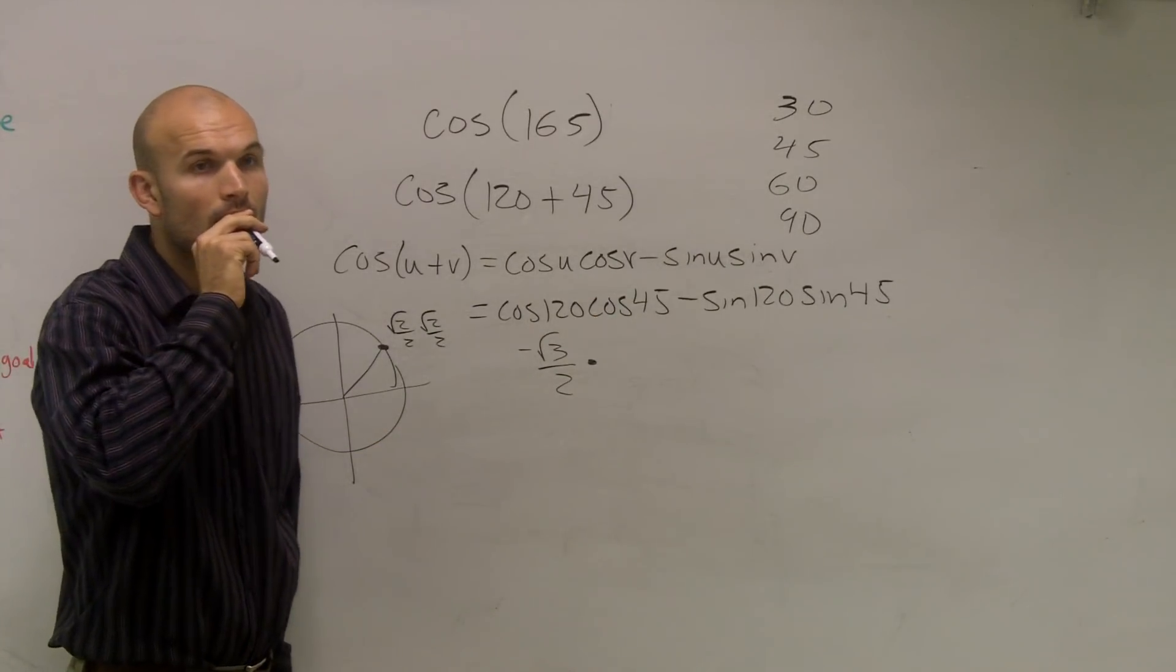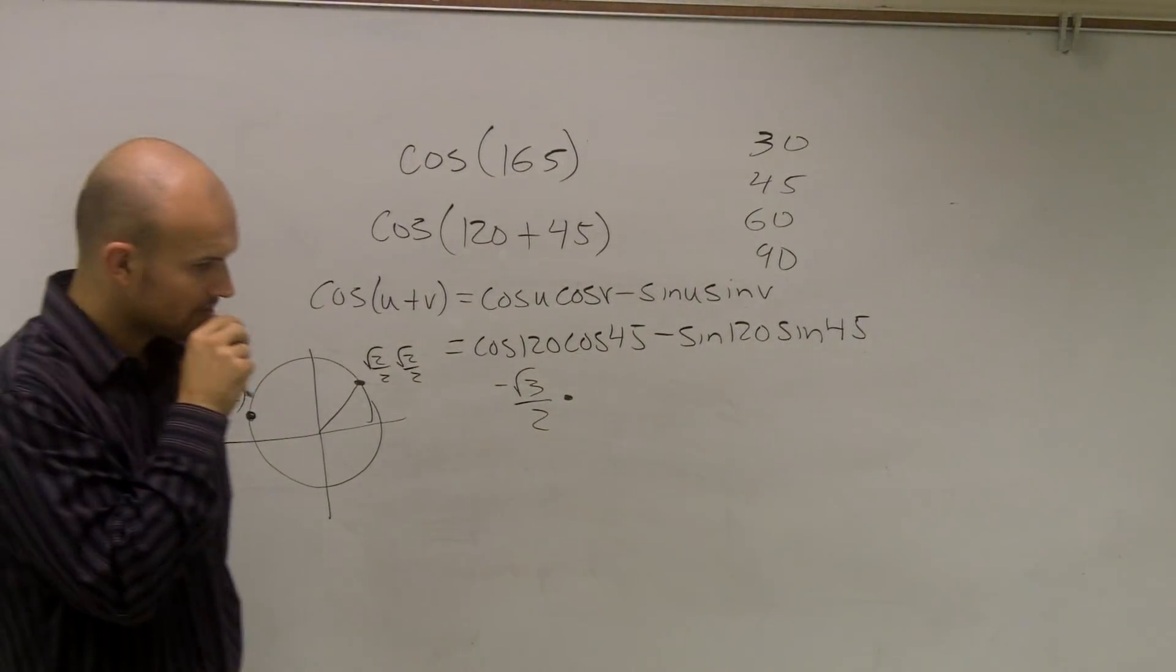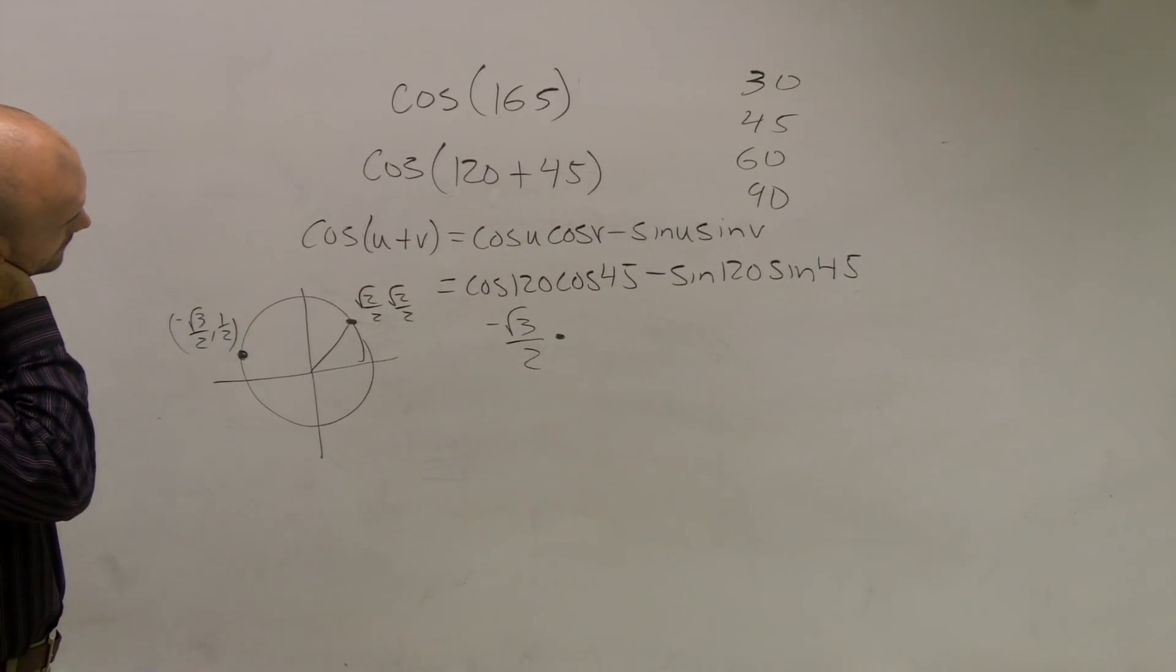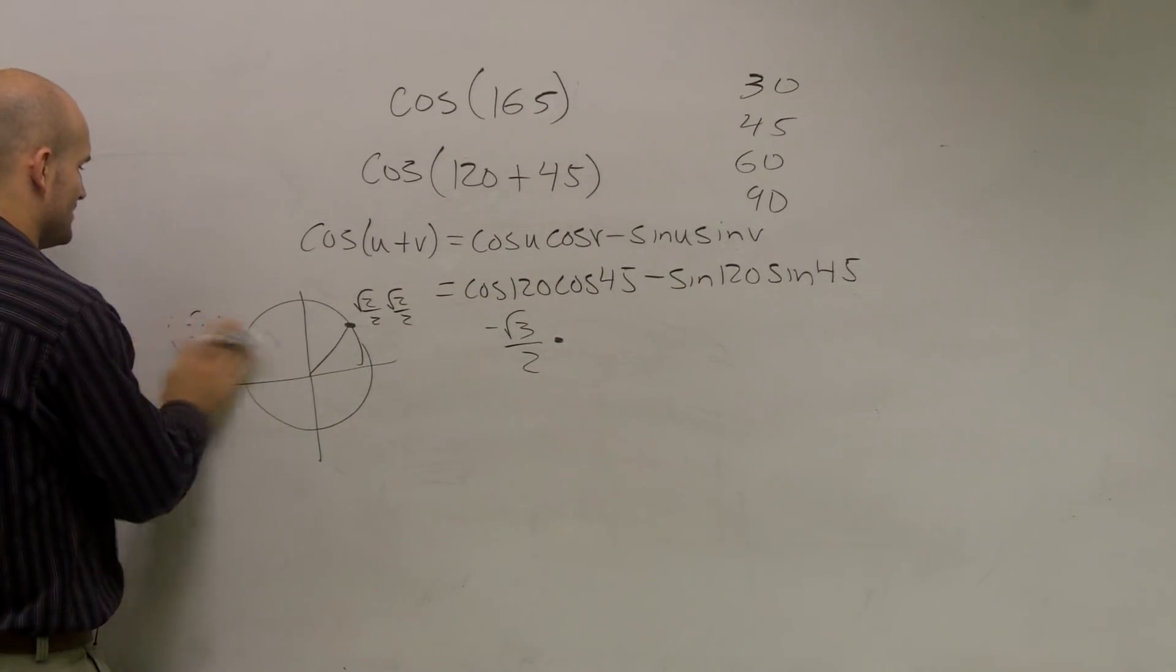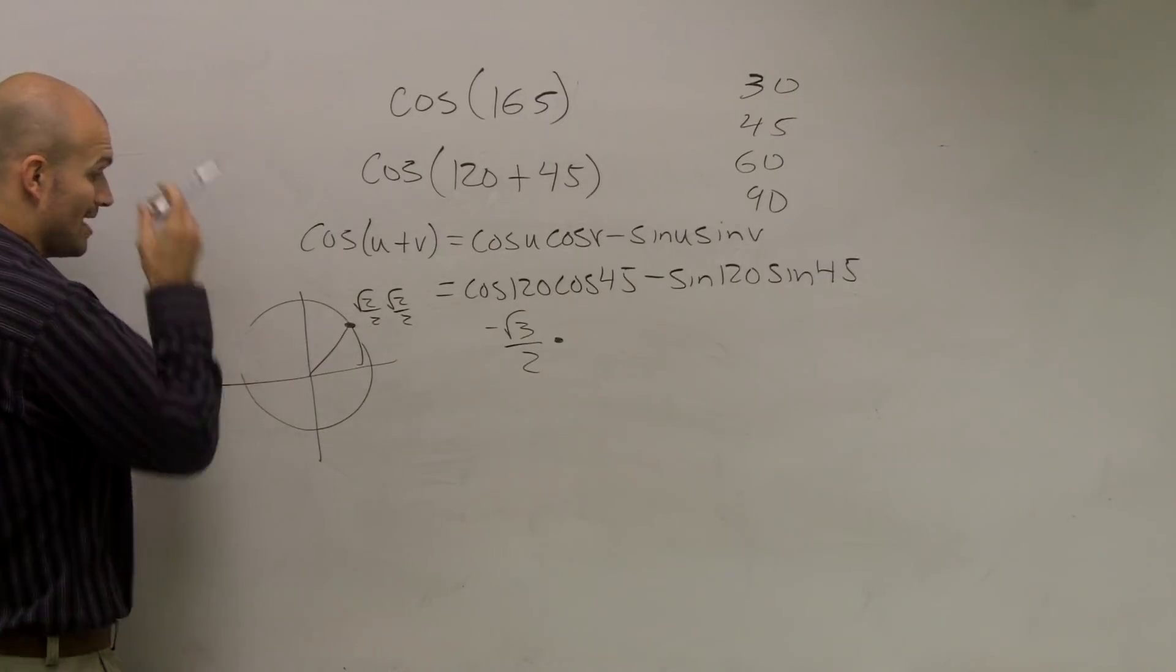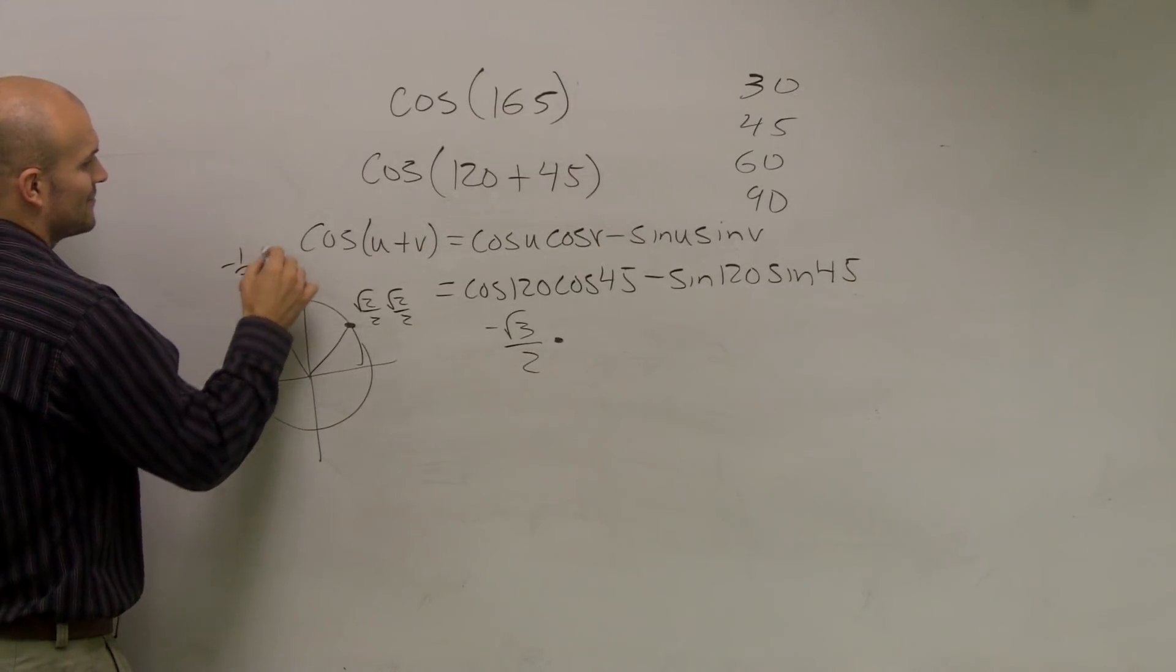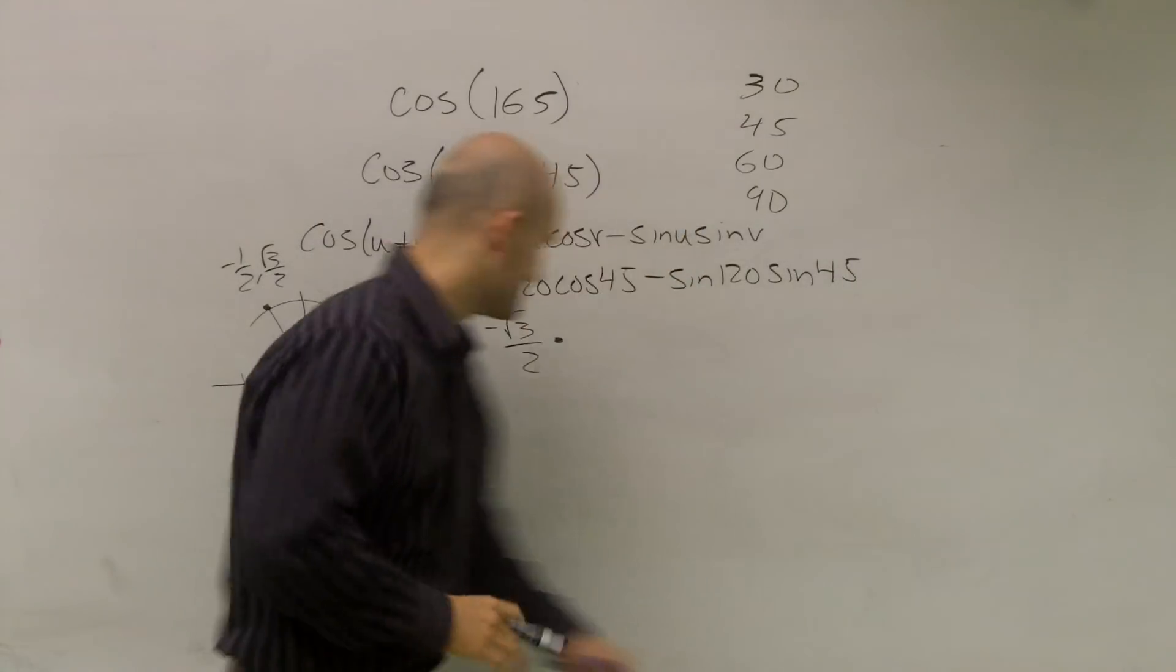Isn't it 90 plus 30? Oh jeez, you're right. I didn't even write my circle correctly. So this would be 90 plus 30 degrees, right? You're right, thank you. Negative 1 half, radical 3 over 2. Thank you. I think I'm kind of moving a little bit too fast.